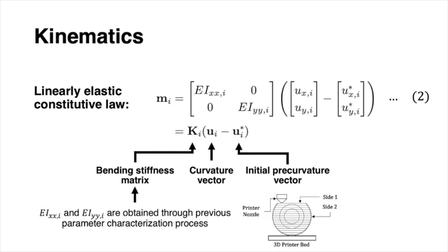The bending stiffness matrix contains the flexural properties that are obtained through the parameter characterization process. Note that in contrast to concentric tube robots, the bellows flexural rigidity values can be different in the two bending directions.